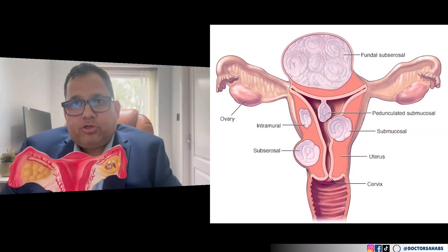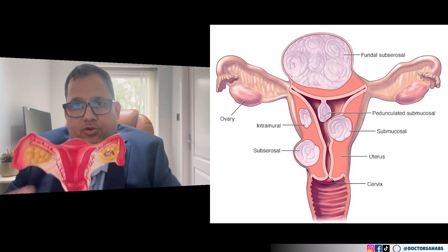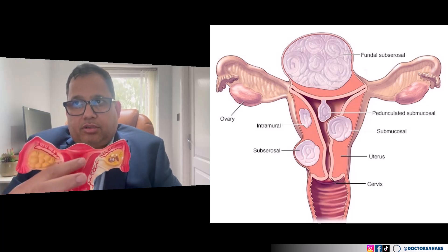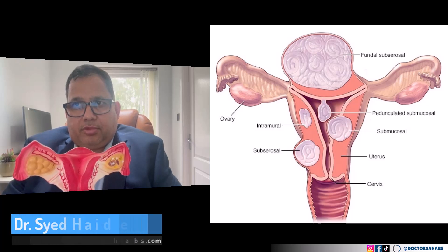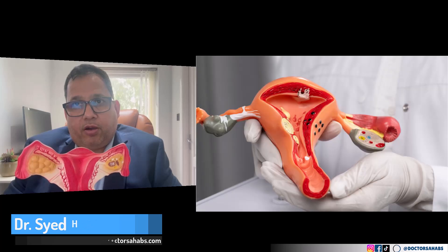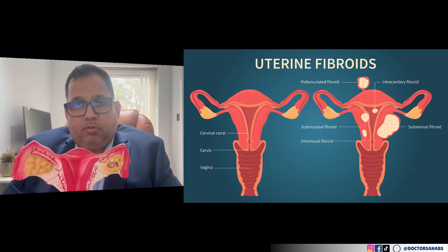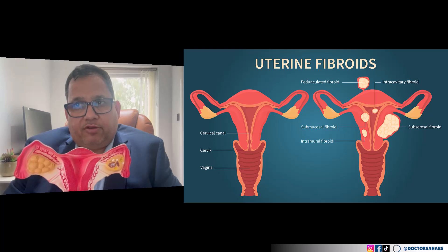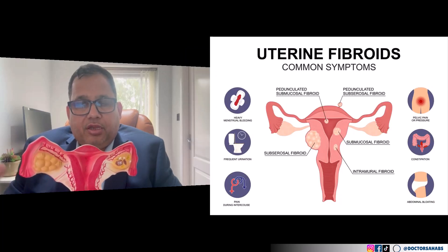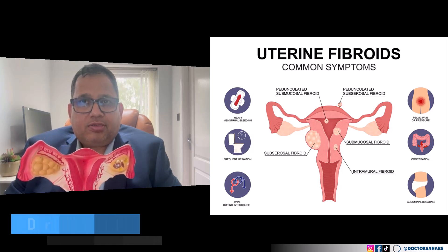Uterine fibroids are non-cancerous growths in and around the uterus, sometimes known as myomas, uterine myomas, or leiomyomas. The most common symptoms of uterine fibroids are heavy and painful periods, lower abdominal pain, lower back pain, frequent urination, and constipation.